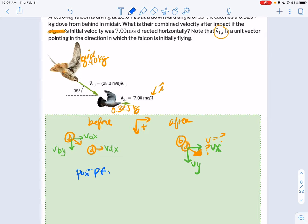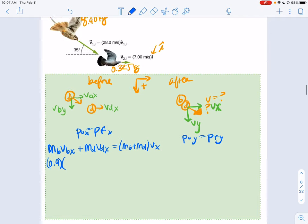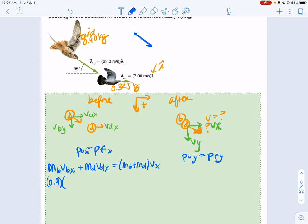P0 equals PF in the X, and P0 equals PF in the Y. So initially in the X we're going to have mass of the bird, V of the bird X plus mass of the dove, V of the dove X equals their combined masses times VX, which is going to be the final.